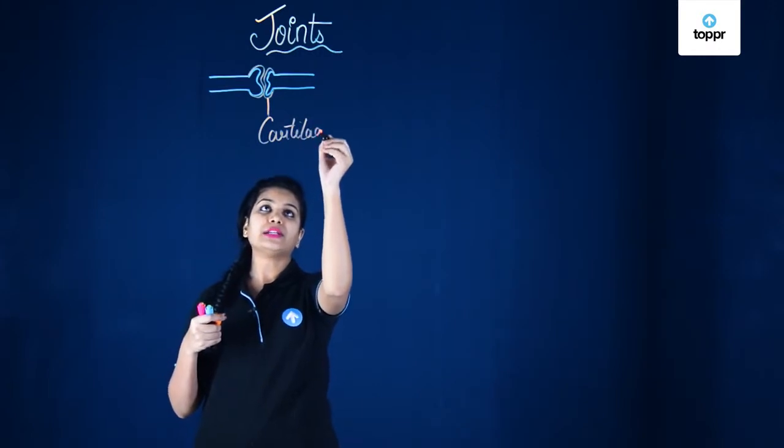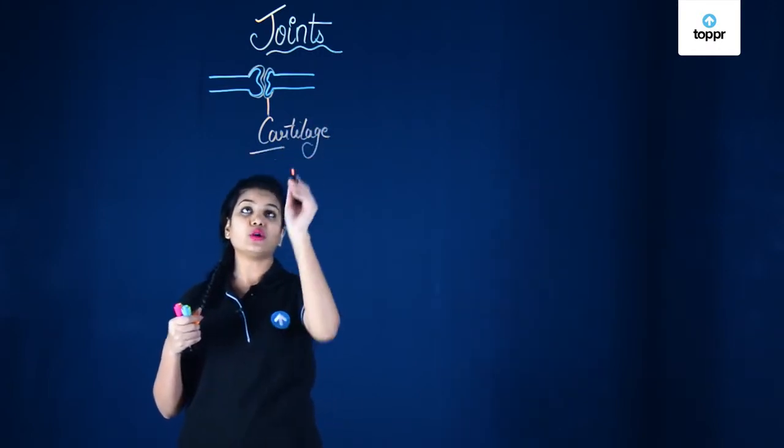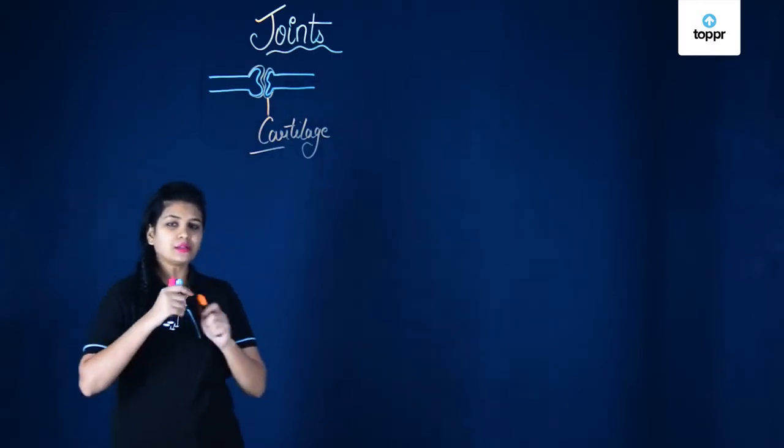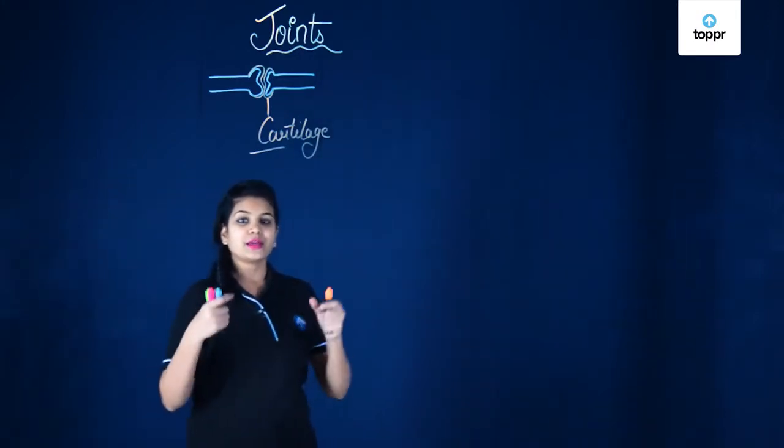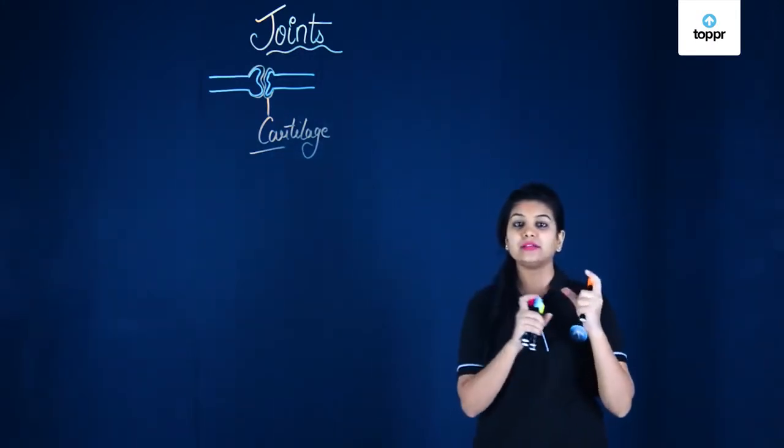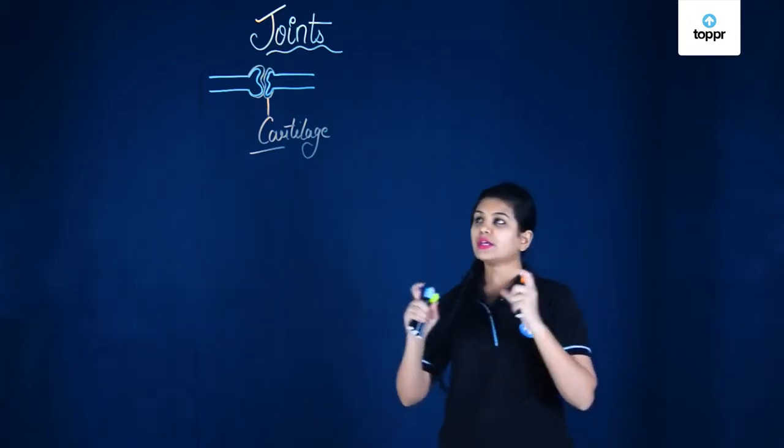Cartilage is not only present at the ends of bones but it is present at different parts of the body as well. For example, it is present in your ear pinna — you can observe that it is so soft. Similarly, it is also present in the joint between the ribs and the sternum. So there are a number of cartilages present in different parts of your body, and here between the two bones their main function is to prevent friction.